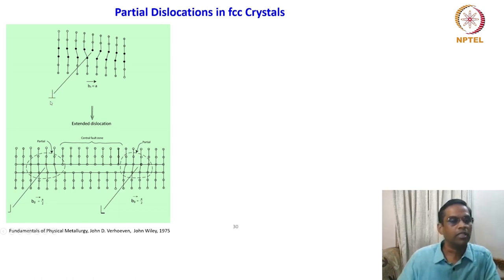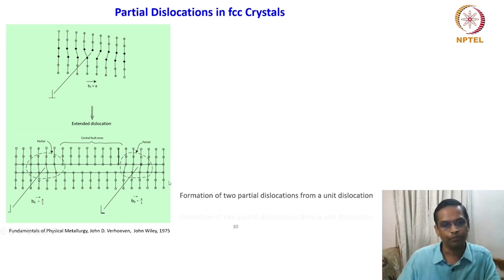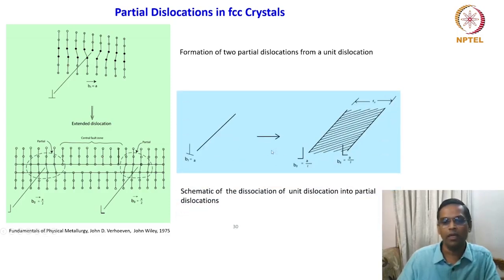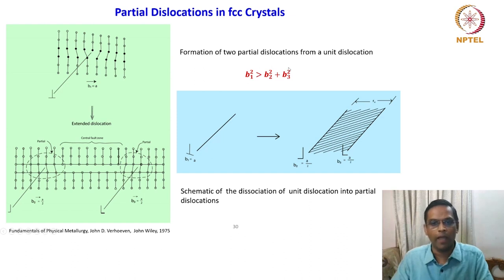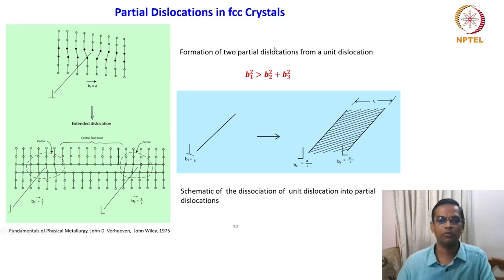The full dislocation is represented like this; a half dislocation for convenience can be put like an L-shape and the other as a reverse L-shape, and the Burgers vector is also half-half. This is the same way of representing it, but in a more elaborate way. The hatched region gives an area of fault region. This is a partial dislocation, and it forms only after verifying with Frank's rule, which predicts whether this kind of reaction is feasible or not.